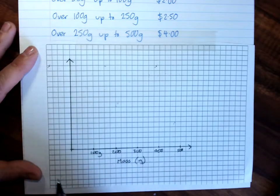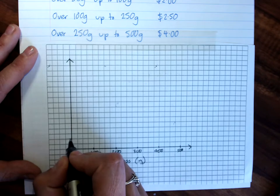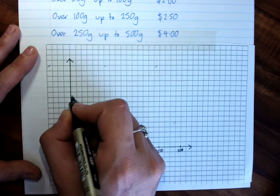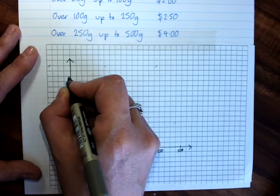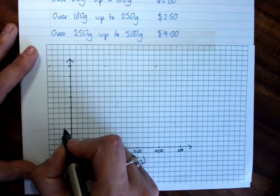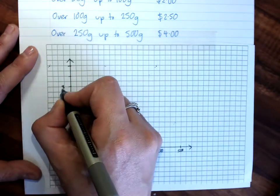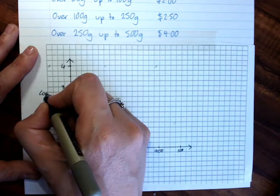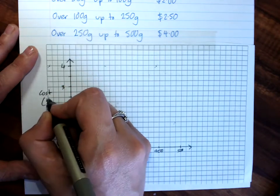And, heading up this way, I want to get up to $4. So, 1, 2, 3, 4. This, of course, is cost in dollars.